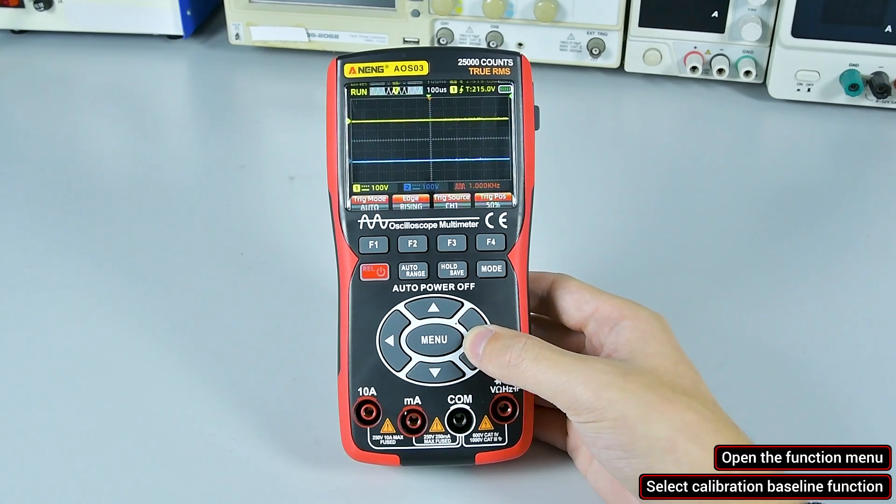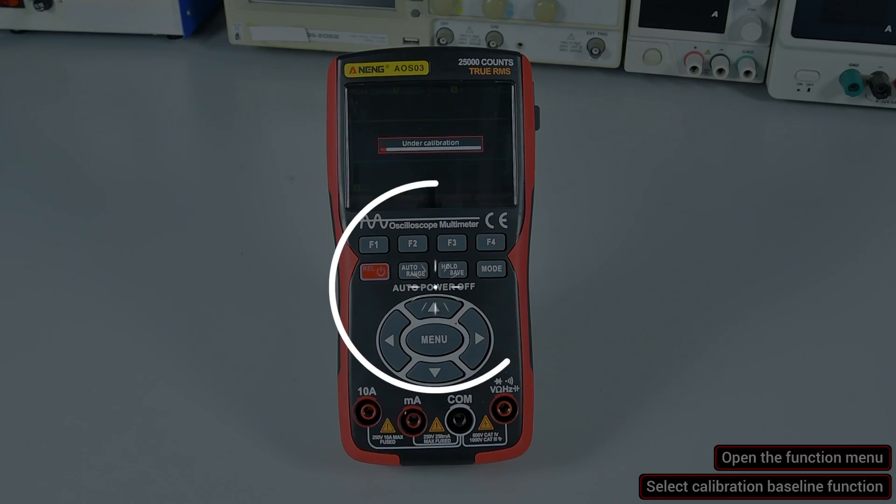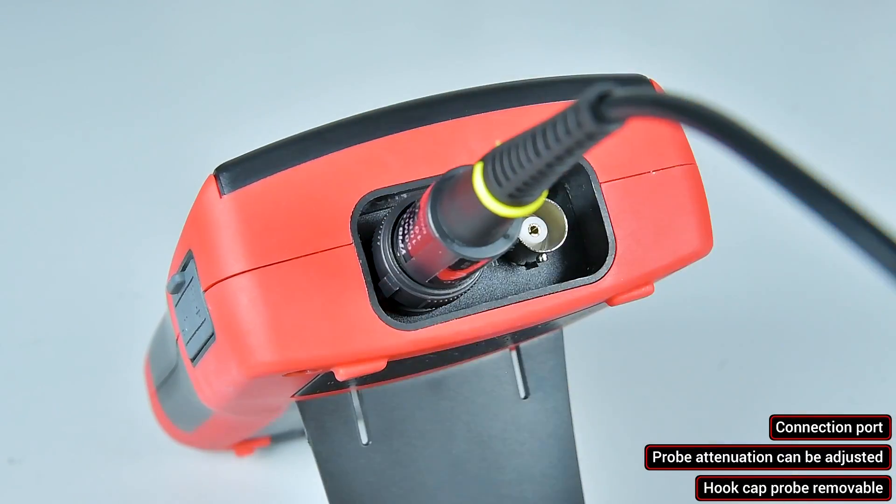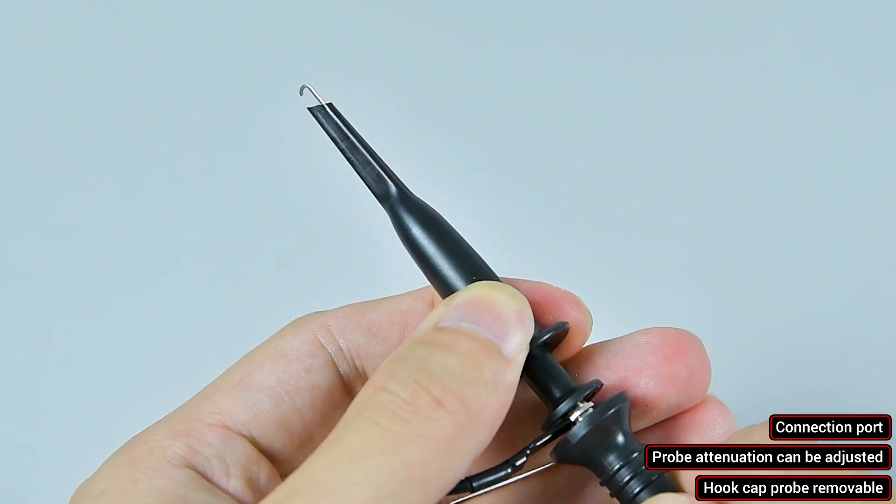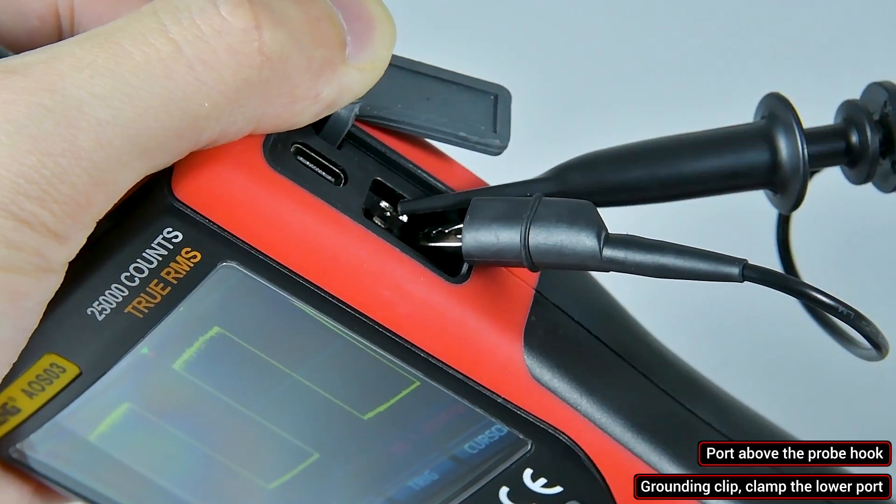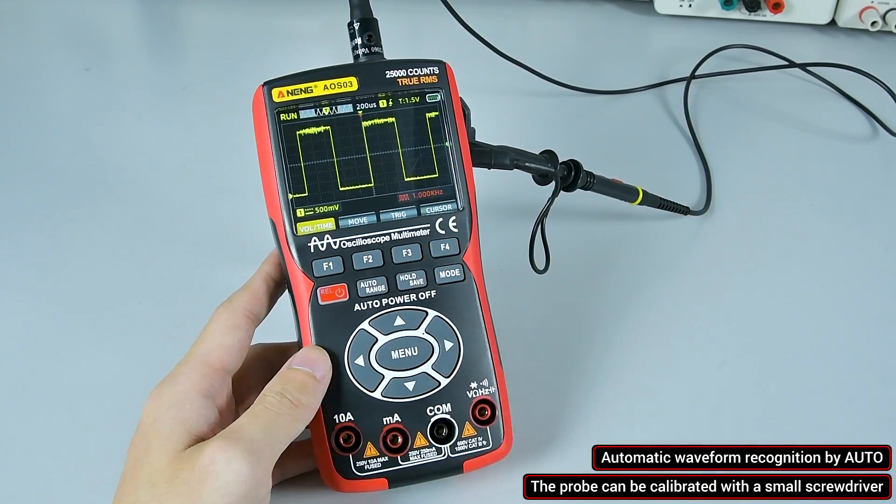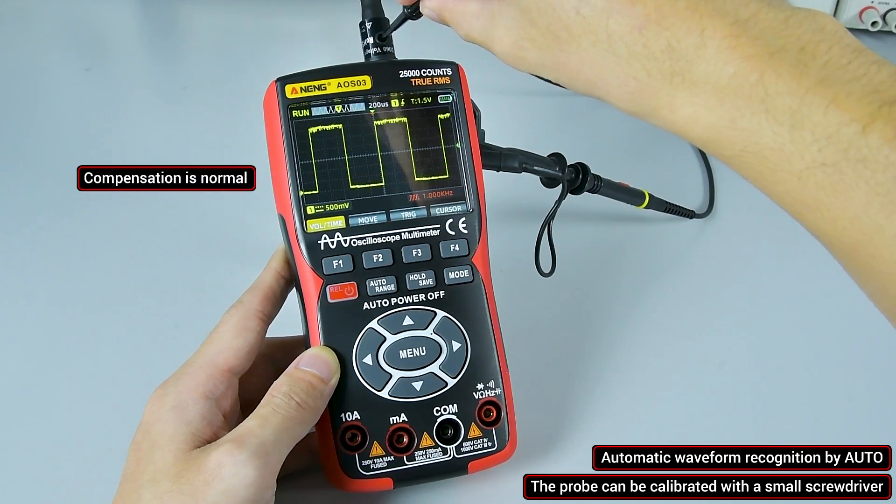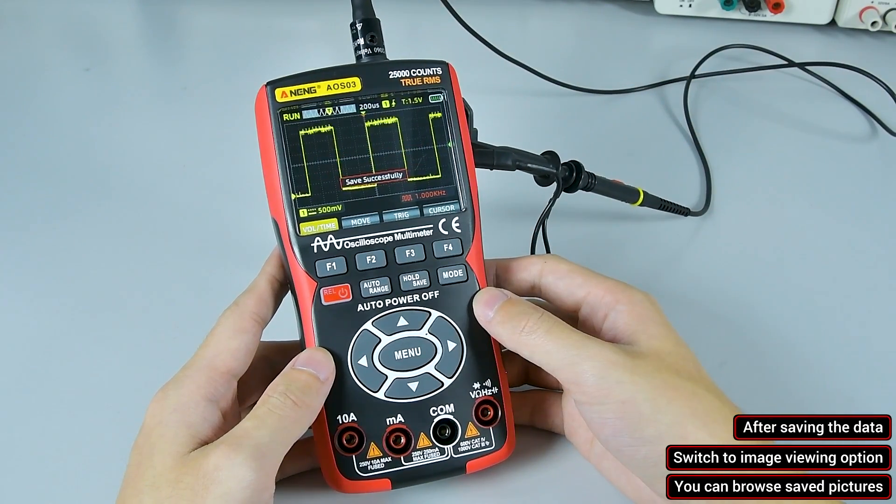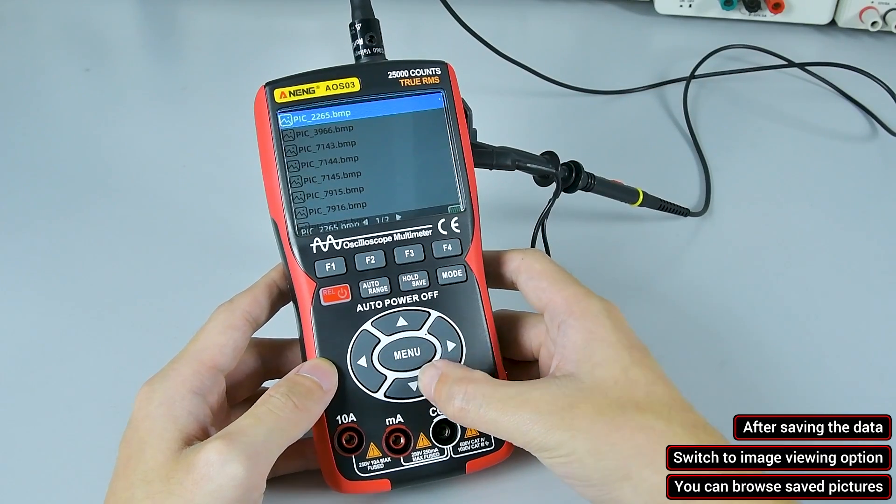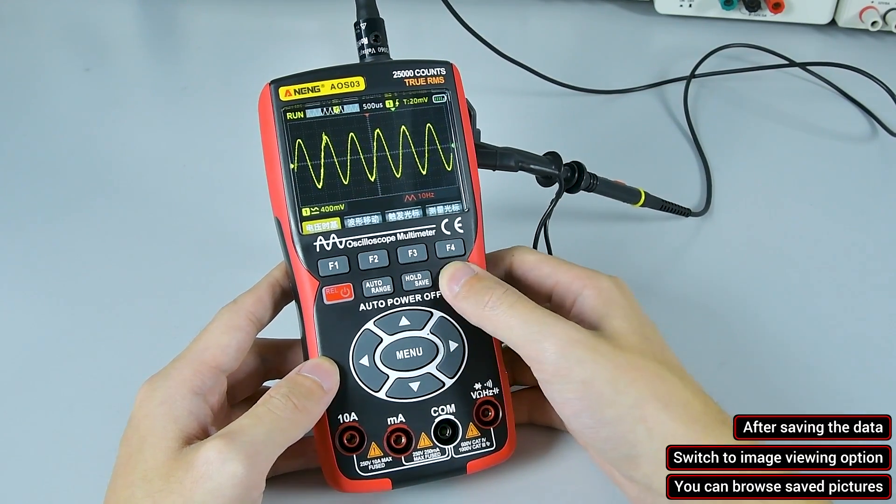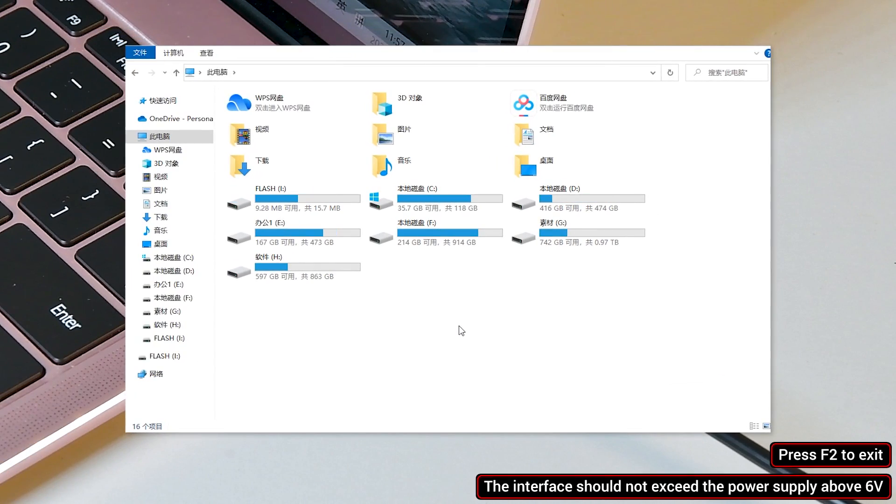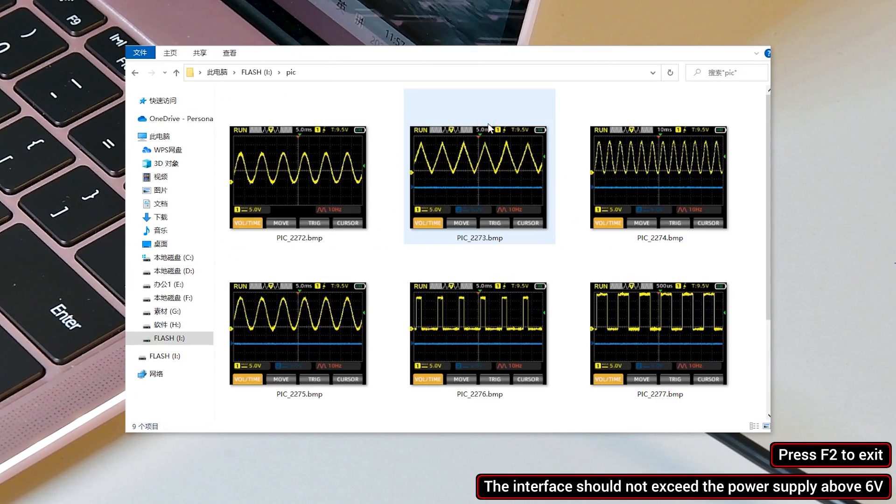Open the function menu, select the calibration baseline function. Automatic calibration will last about one minute. Do not enter signals during calibration. Connection port probe attenuation can be adjusted. The hook cap probe is removable. Grounding clamp clamps the lower port probe hook above the port. Automatically identify waveforms by auto. The probe can be calibrated with a small screwdriver. Inadequate compensation, overcompensation, compensation is normal. Save the data. Switch to the picture view option, browse the saved images. You can also enter data export mode. In this mode, connect the data cable to the computer, insert the charging port to export the data. The charging interface should not exceed 6V or more.